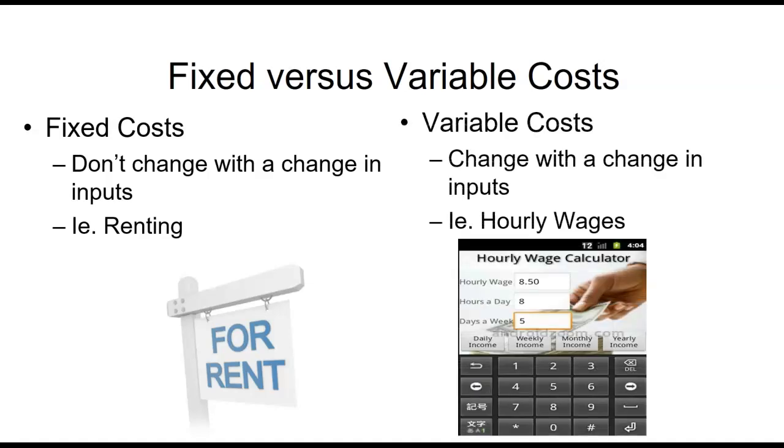Compare that to a variable cost which are when costs do in fact change. A typical example are things like hourly wages. If you work for $8.50 an hour for eight hours a day, then you owe $68. If you work for ten hours, then you owe that much more. So because you change the number of inputs, in this case number of hours, the cost varied, hence variable costs. Now important thing to know is the variable costs are also referred to as operational costs. They only exist if the firm operates. That's going to come into play later in the course, not today.